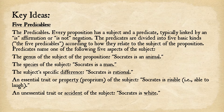Predicates name one of the following five aspects of the subject. The first predicable is genus — the genus of the subject, as in 'Socrates is an animal.' The species of the subject, as in 'Socrates is a man.' The subject's specific difference, as in 'Socrates is rational' — this is the kind of difference that distinguishes the species, the defining characteristic of that species.